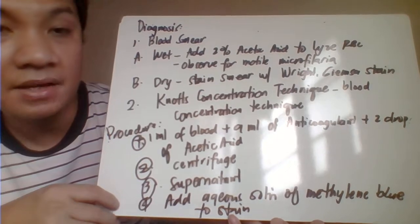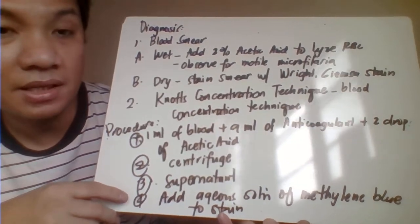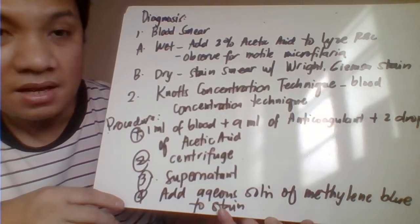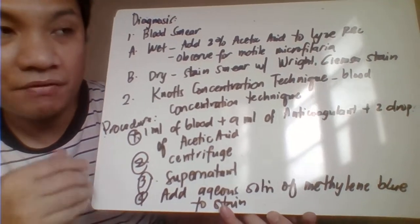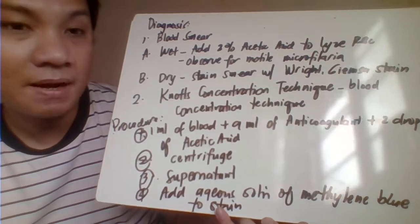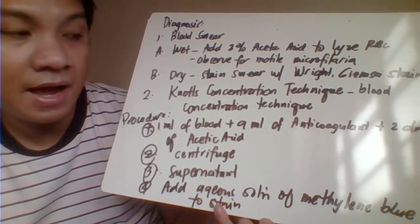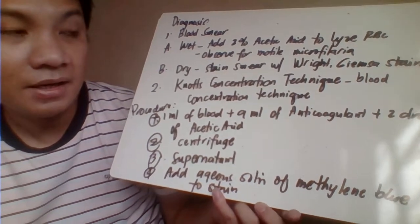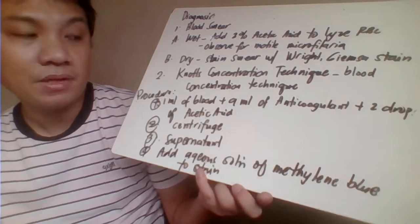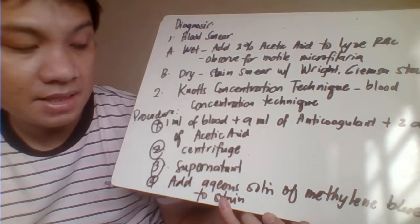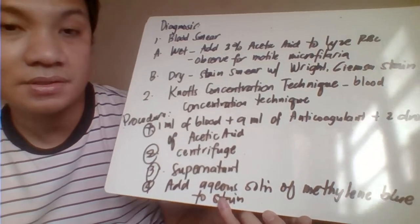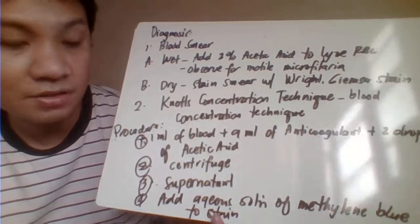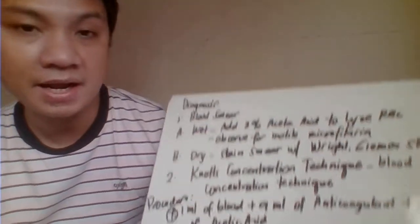For dry smears, prepare thick and thin smears and stain them for identification of microfilaria, allowing better scrutiny of morphology. Another technique is the NEST concentration technique — a blood concentration technique where you add anticoagulant and 2 drops of acetic acid, then centrifuge, take the supernatant, and stain for microfilaria identification.